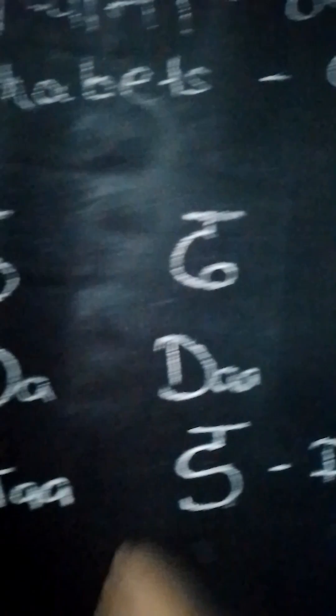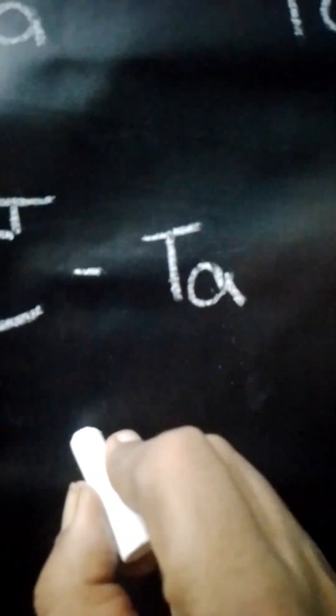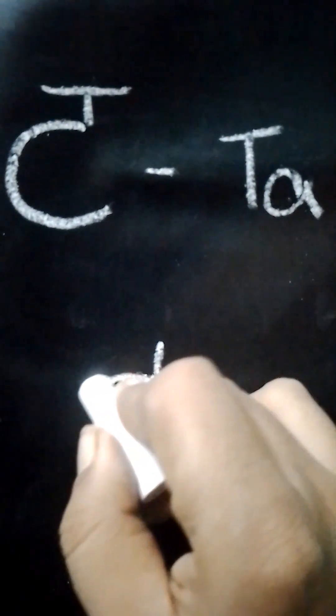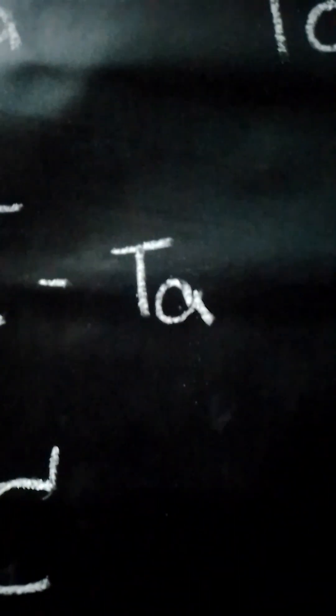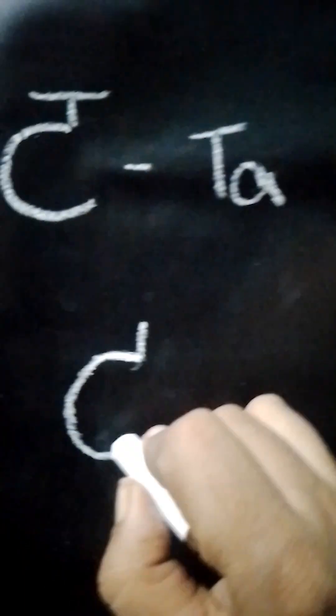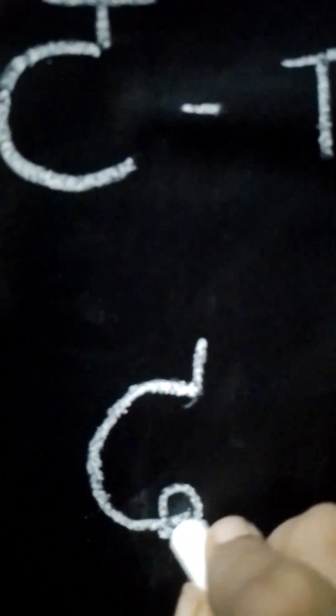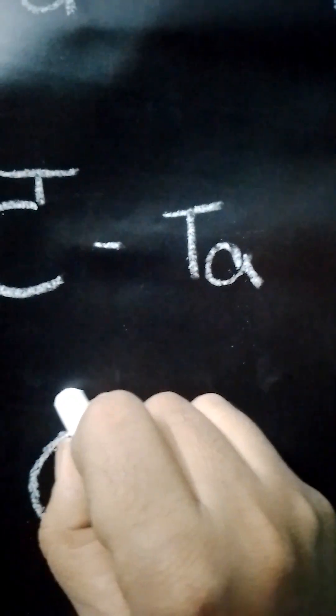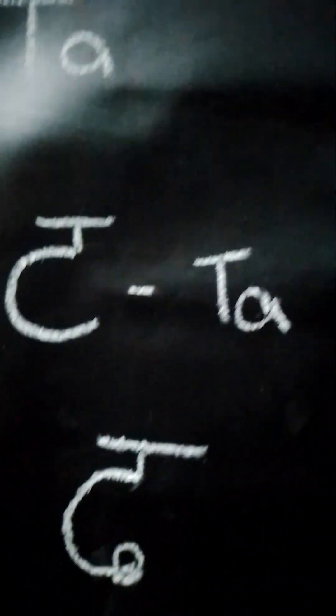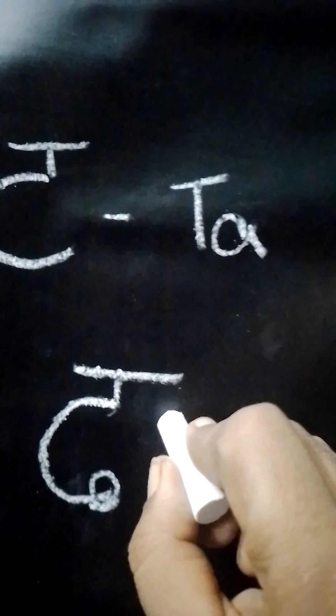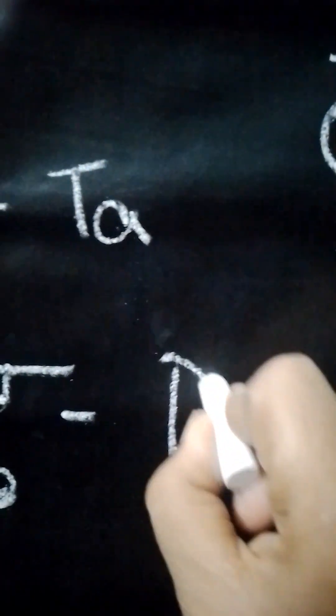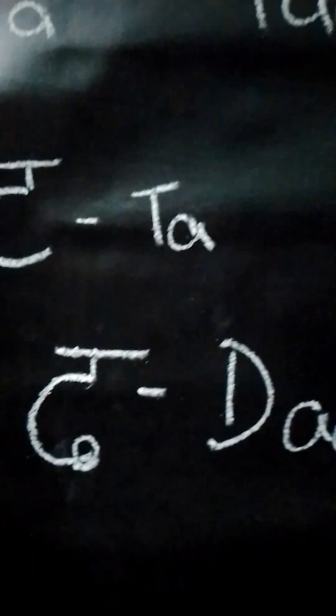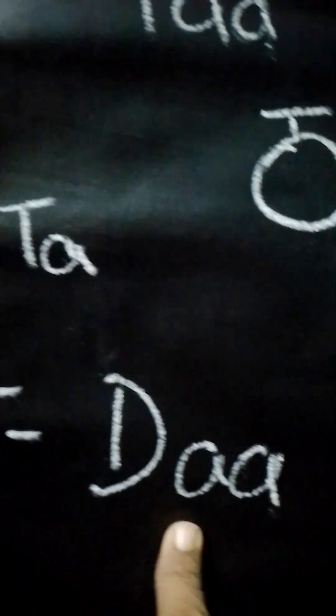Now the fourth alphabet Da. For this we are going to draw a small standing line, then a semicircle, and draw a circle inside the semicircle. At the end at the top we are going to draw a sleeping line. So this alphabet is called Da in Hindi.